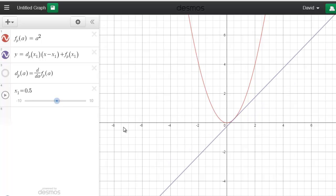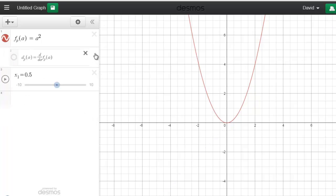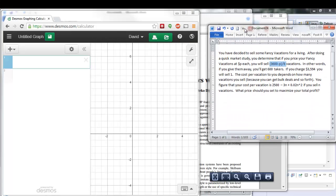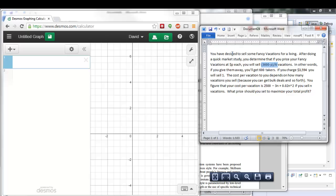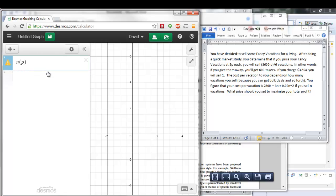So that's a quick overview of the things that Desmos can do. Let's use it to quickly solve the problem from the last test. I'm selling some fancy vacations. I'm doing a market study. I've determined that if I price my fancy vacations at p dollars each, I will sell this many vacations. So let's make a function for the number of vacations I sell as a function of price. So I said it was 3,600 minus p divided by 6.